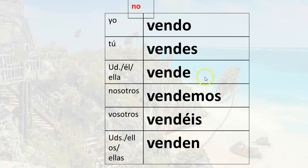Or you are not selling. Usted vende, usted no vende. Él vende, él no vende. Ella vende, ella no vende. Nosotros vendemos, nosotros no vendemos. Vosotros vendéis, vosotros no vendéis. Ustedes venden, ustedes no venden. Ellos venden, ellos no venden. Ellas venden, ellas no venden. So there you have it negated.